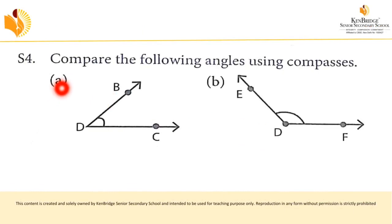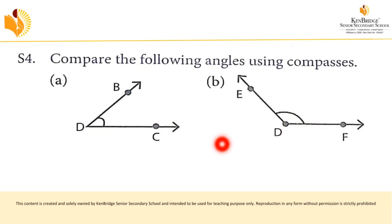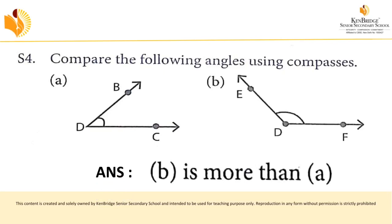Question S4: compare the following angles using a compass. Keep one end of the compass on one point of angle A, the other end on the other point, then measure on the scale. Do the same for angle B. By visual inspection, angle B is more than angle A — so the answer is B is greater than A.